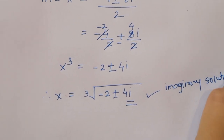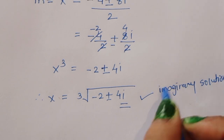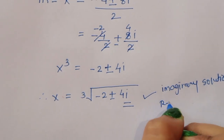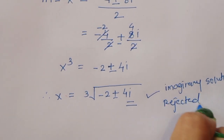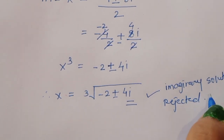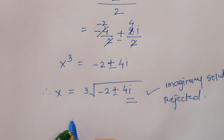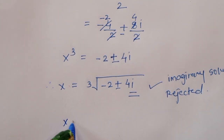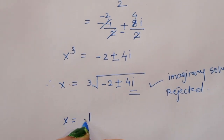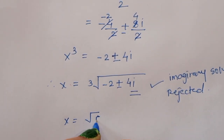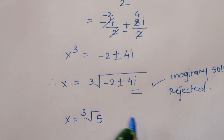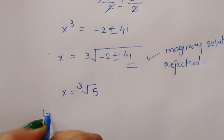This is an imaginary solution, not a real solution. Therefore this is rejected. We got only one real solution: x equals cube root of 5.